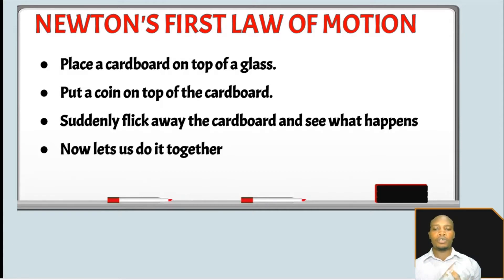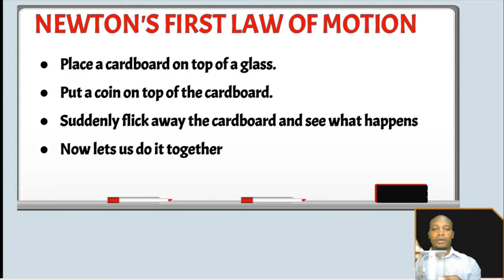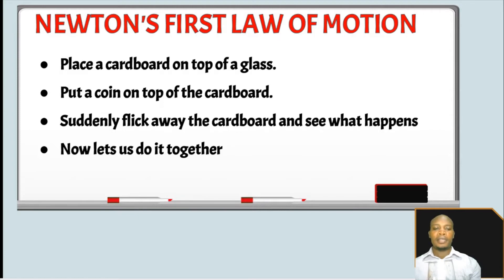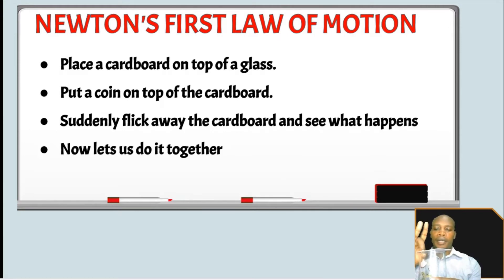This demonstration is going to help us understand Newton's first law of motion. The first instruction is: place the cardboard on top of the glass, like that. Then put a coin on top of the card, like that. Then suddenly flick away the card and see what happens. Let us do this together — I'm going to flick away the card, like that.